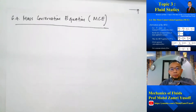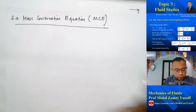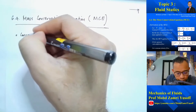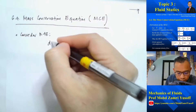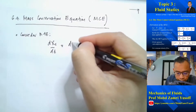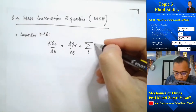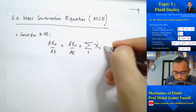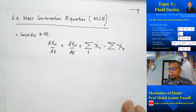Bismillahirrahmanirrahim. In this part, we would like to apply the Reynolds transport equations to mass conservation equations. If we consider again the Reynolds transport equations, the rate of change of X for the control volume is equal to the rate of change of X for the system, plus the rate at which X enters the control volume, minus the rate at which X exits the control volume. That is the general Reynolds transport equation.